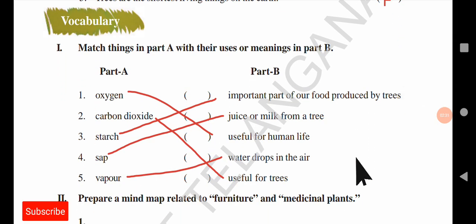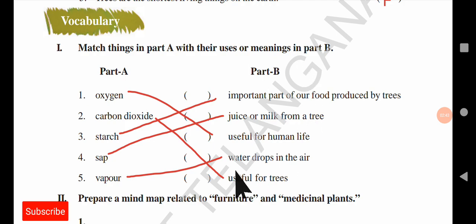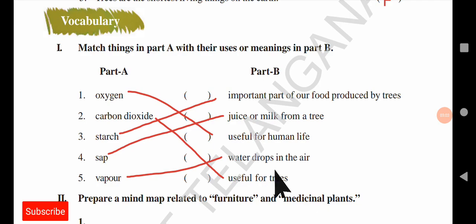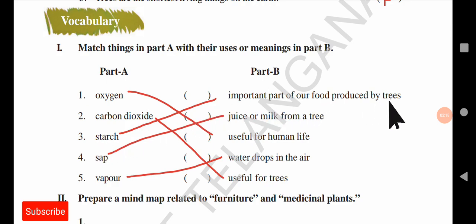Next we have vocabulary. You have to match the things in part A with their uses or meanings in part B. Oxygen is useful for humans — they breathe in oxygen. Carbon dioxide is useful for trees — trees need carbon dioxide to make starch. Starch is an important part of the food produced by trees. Sap is the juice or milk from a tree. Vapor means water drops in the air. Please note these words very carefully.